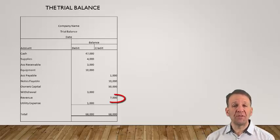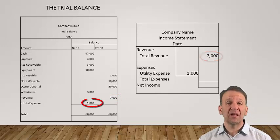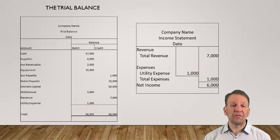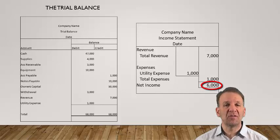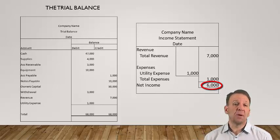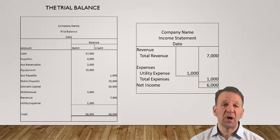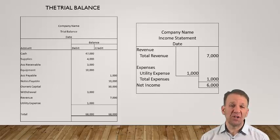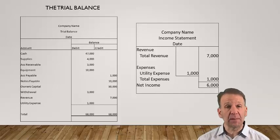Most people don't understand what a debit and a credit is, so that is why the financial statements are prepared without them. Now we move the revenue balance over into our income statement and we also move the expense balance into the income statement. We subtract the total expenses from the total revenues to get our net income. This is the profit that the business earned over a certain time period such as a month or a year. In our income statement we only have one revenue and only one expense, but most income statements would have more than one type of revenue and many expense accounts as well.